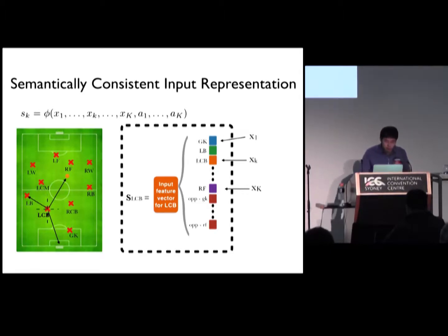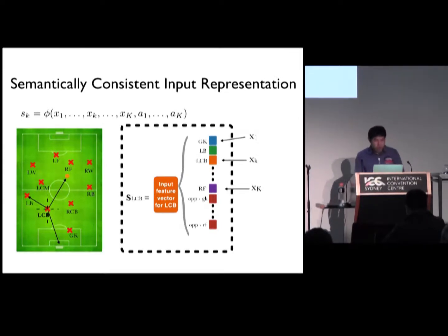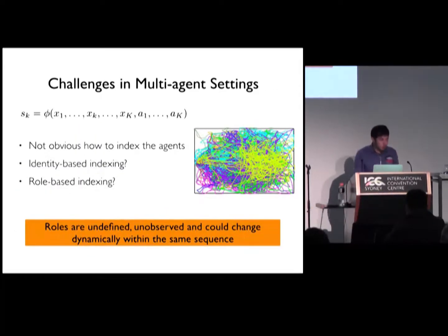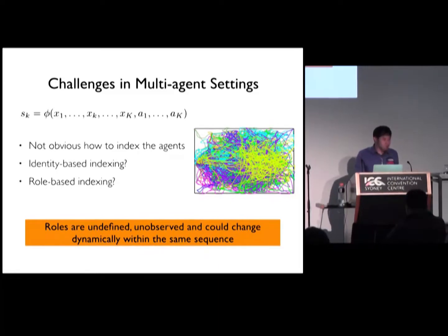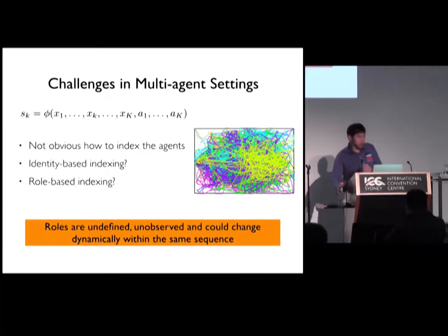If we think about that a little bit more, we realize that this notion of role is heuristic, created for the sake of linguistic convenience. If we have to pin down precisely the definition of a role, it's not at all clear what being a left defender exactly means. On top of that, even if we have a way to define the role, in a coordinated setting, roles may change even within the same trajectories — for example, two agents may swap roles. The challenge is that we'd like to do role-based indexing, but roles are undefined, unobserved, and could change dynamically within the same trajectories. All we get from expert demonstrations are trajectories with no role information — so how do we make learning tractable?